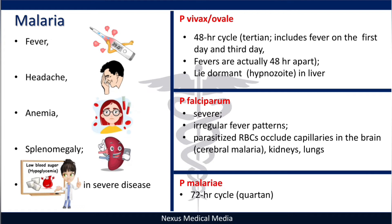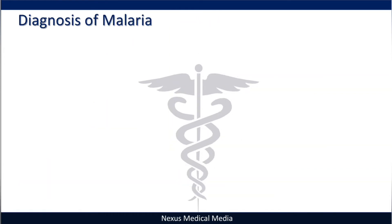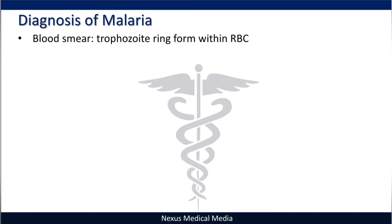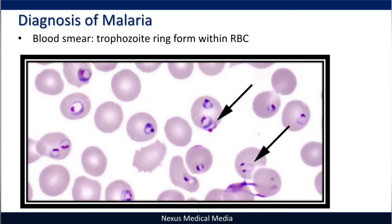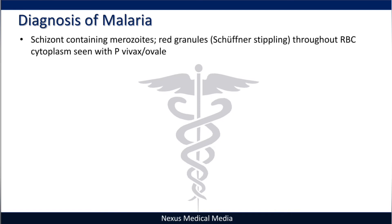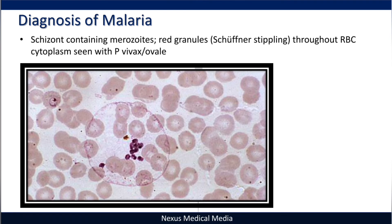For diagnosis of malaria, blood is drawn and a blood smear is examined. In the smear you can see trophozoite ring forms within the red blood cell. You can also see a schizont containing merozoites, or red granules — called Schüffner's stippling throughout the red blood cells, specifically for vivax and ovale.